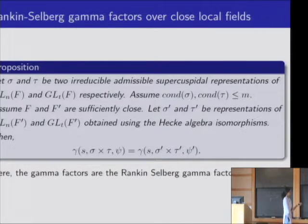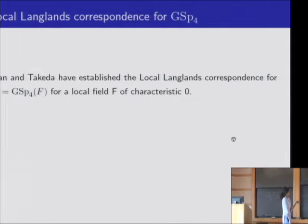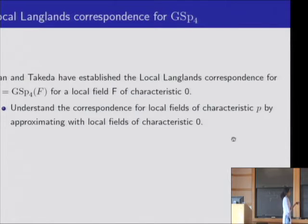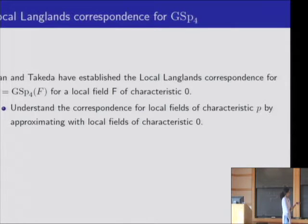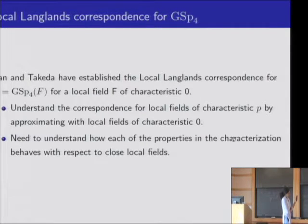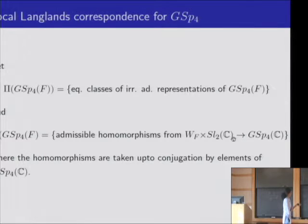I reviewed all of this to set the stage for the problem we are currently thinking about. Recently, Gan and Takeda established the local Langlands correspondence for GSp_4(F), assuming the local field F is of characteristic 0. The problem we are thinking about is: can we understand the local Langlands correspondence in characteristic p for these fields by approximating them with fields of characteristic 0? They have given a list of properties in their characterization, and we need to understand how each of those properties behaves with respect to close local fields.